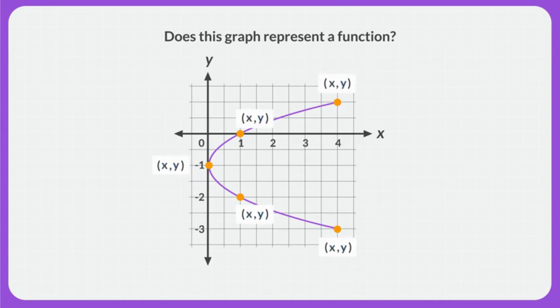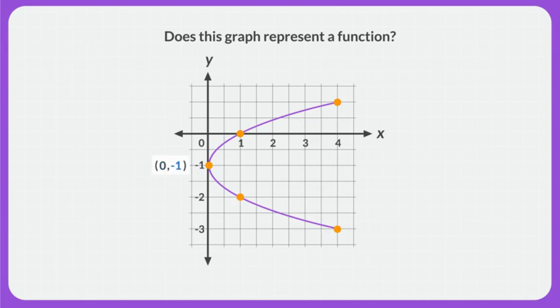So I'm going to look at the points on this graph to see if each x value, or input, has exactly one y value, or output. Starting on the far left side, I see that this point has an x value of 0 and a y value of negative 1.